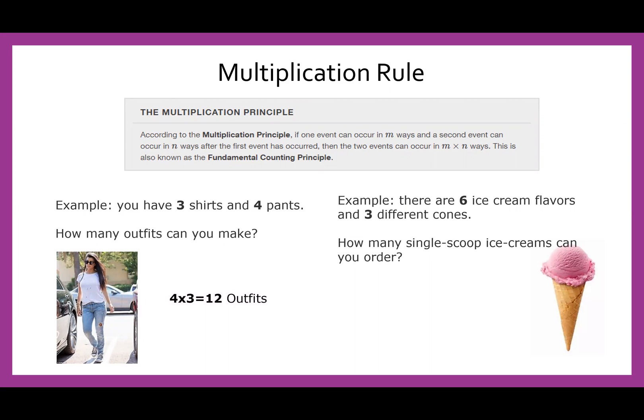If we have six ice cream flavors and three different cones, then the total way to make a scoop on a cone would be six times three single scoop combinations.